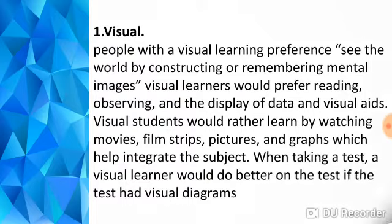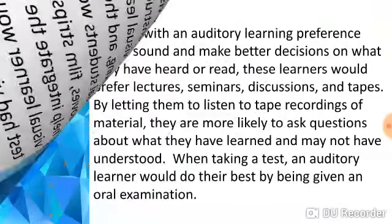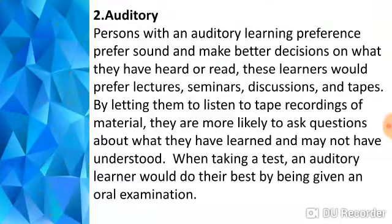Number two — Auditory. Persons with an auditory learning preference prefer sound and make better decisions based on what they have heard or read. These learners prefer lectures, seminars, discussions, and recordings. By listening to recorded material, they are more likely to ask questions about what they have learned. When taking a test, an auditory learner would do their best given an oral examination.